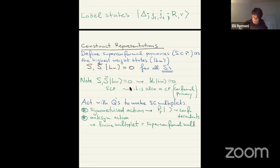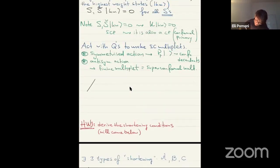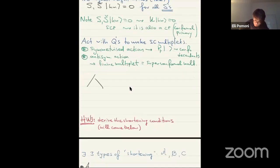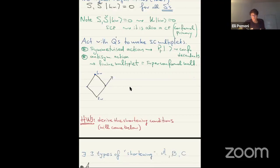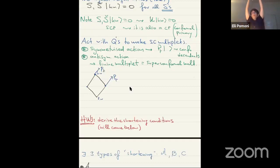With antisymmetrized action, I get a finite multiplet, and this is what I'm going to call a superconformal multiplet, or a representation. The superconformal multiplet looks something like this: here there will be the highest weight, here the lowest weight. These are all finite. At each point, when I do symmetrized action over the Q's, I get momenta everywhere. So I have a finite little square — my superconformal multiplet — and the whole thing goes to infinity upward as conformal descendants.